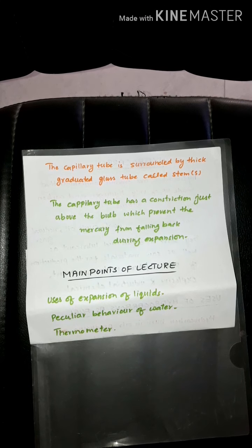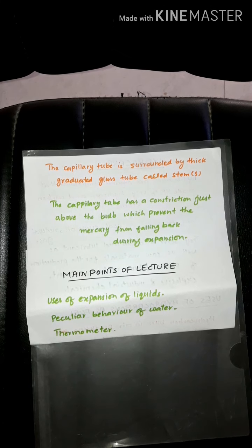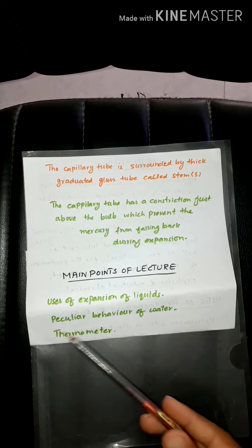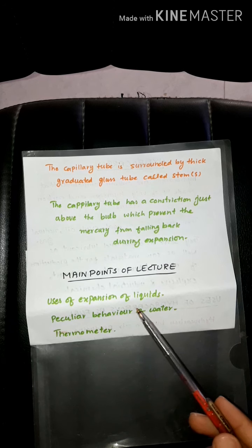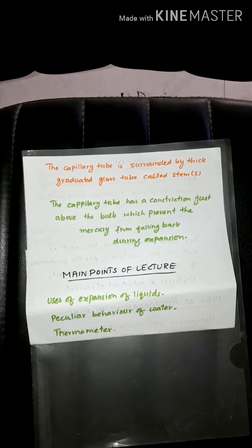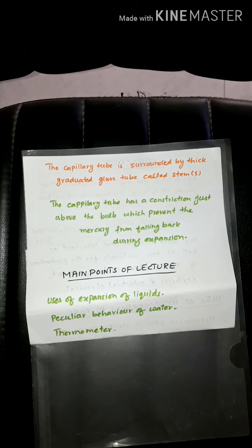Bismillah, Assalamualaikum, welcome to North School and College. In the previous lecture we discussed the uses of expansion of liquid. Liquids expand more compared to solids, and due to this property mercury and alcohol are used in thermometers. Mercury is preferable because its boiling point is very high and its expansion is uniform.